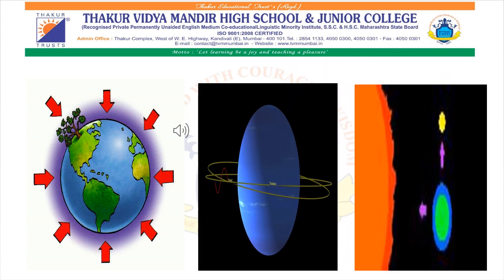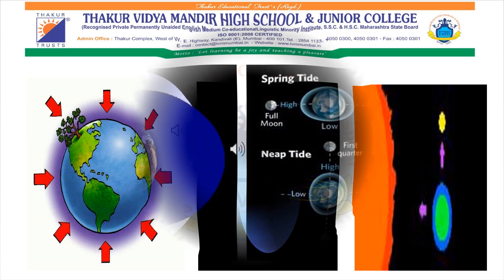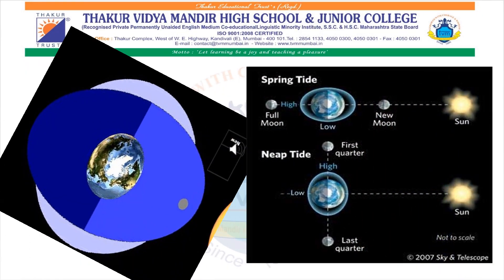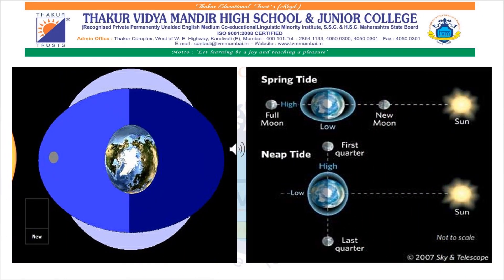In previous parts of the chapter, we have done what centrifugal force of the earth is and how gravitational forces of the sun and the moon cause tides on the earth. We have also learned that tides are of two types: first, according to the height, that is high tide and low tide; and second, according to the phases of moon, that is spring tide and neap tide.